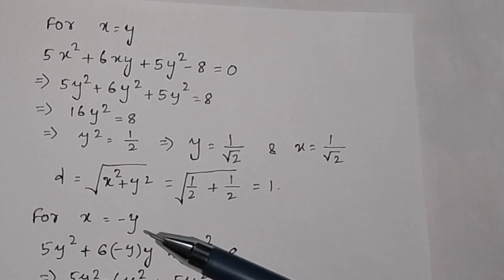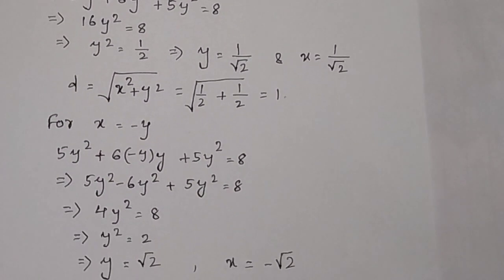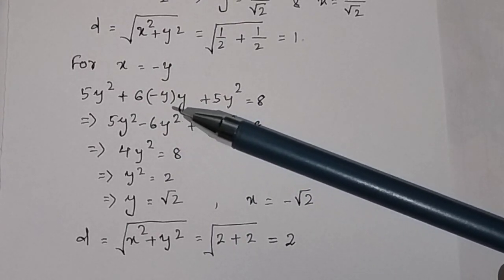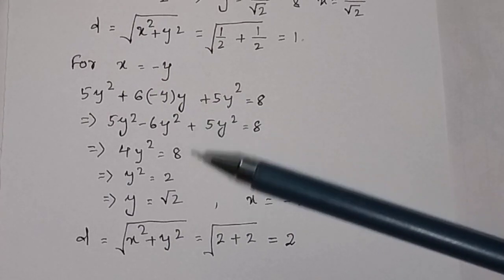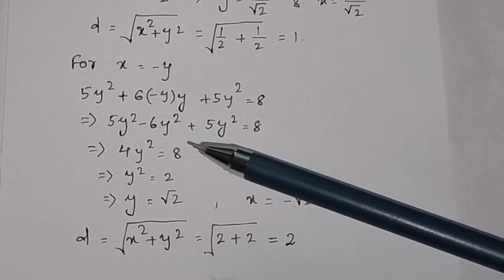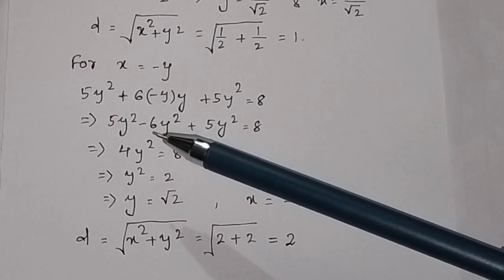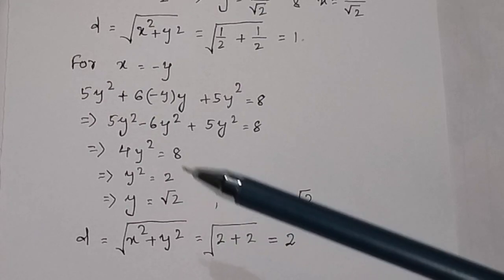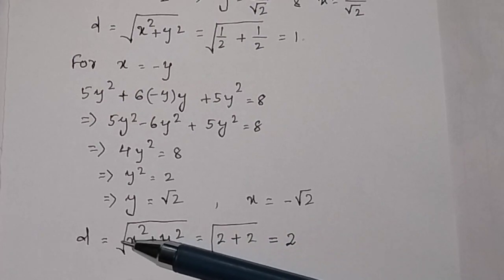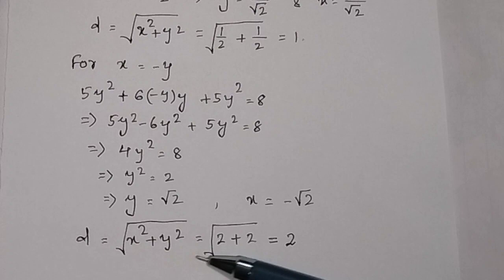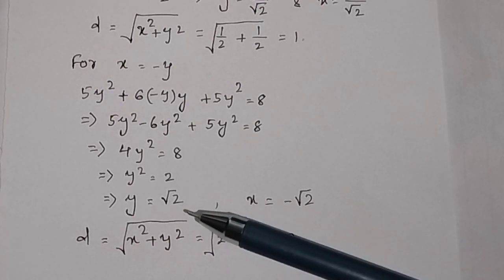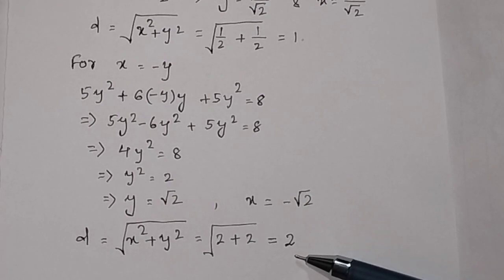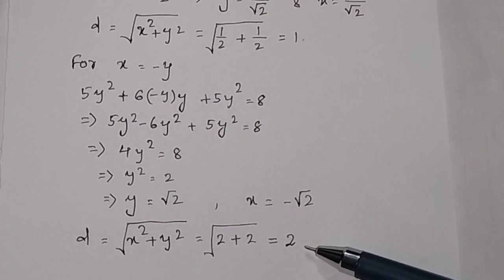Substituting x = -y into the constraint gives: 5y² + 6(-y)(y) + 5y² = 8, so 5y² - 6y² + 5y² = 8, giving 4y² = 8, so y² = 2 and y = √2. Then x = -√2. The distance is d = √(x² + y²) = √(2 + 2) = √4 = 2. This is the maximum distance from the origin to the curve 5x² + 6xy + 5y² - 8 = 0.